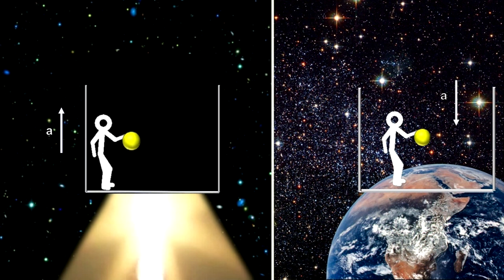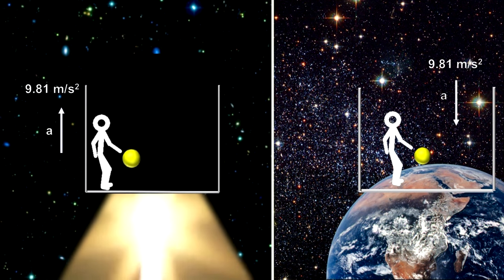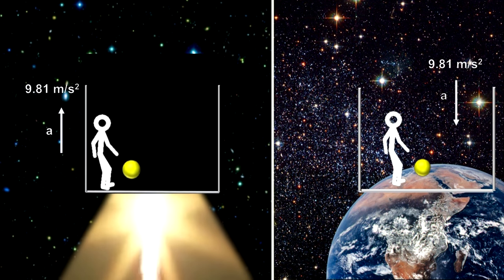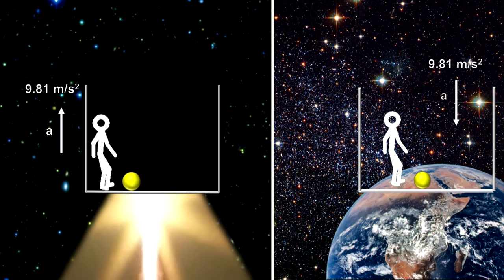To see this, let's compare what the person in the elevator is experiencing and what a person at rest in a gravitational field would experience. We know that Earth's gravity near the surface accelerates objects at 9.8 meters per second squared. If we set the acceleration of the elevator to 9.8 meters per second per second, the occupant would experience the weight he feels on Earth, and the ball would fall at the same rate as it does on Earth.